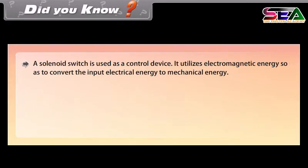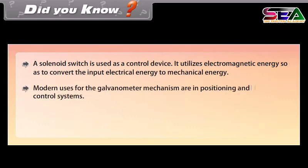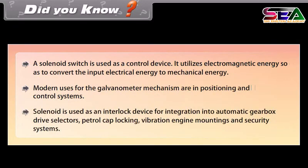Did you know? A solenoid switch is used as a control device — it utilizes electromagnetic energy to convert input electrical energy to mechanical energy. Modern uses for the galvanometer mechanism include positioning and control systems. Solenoid is also used as an interlock device for automatic gearbox drive selectors, petrol cap locking, vibration engine mountings, and security systems.